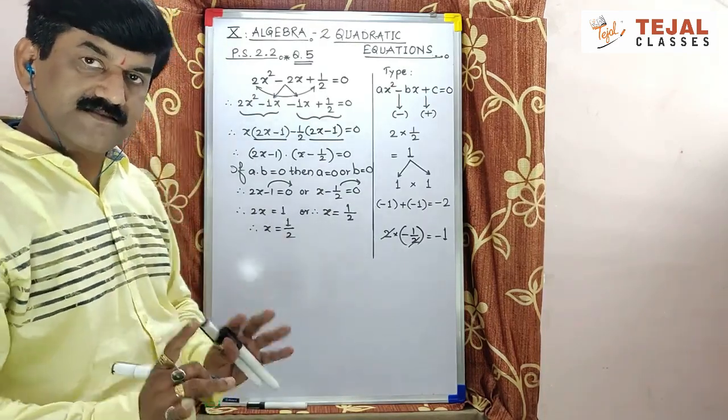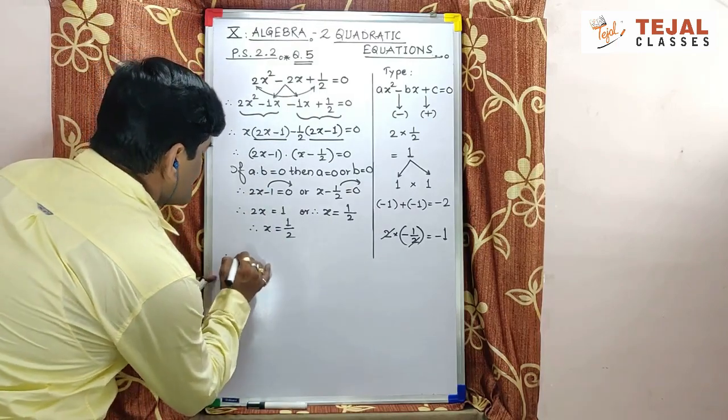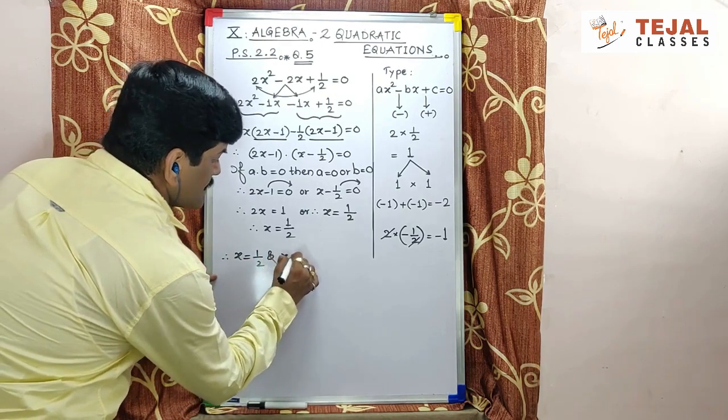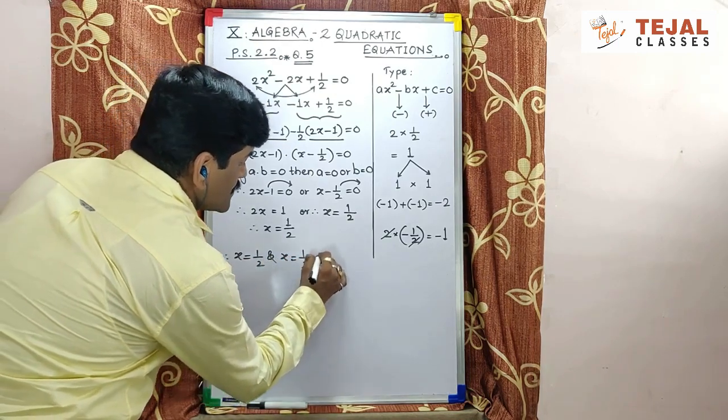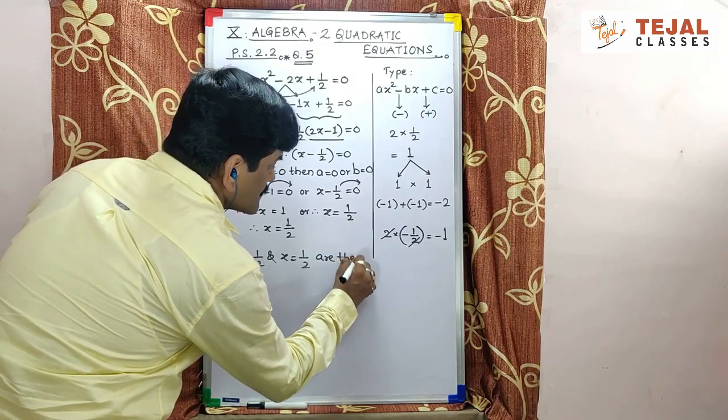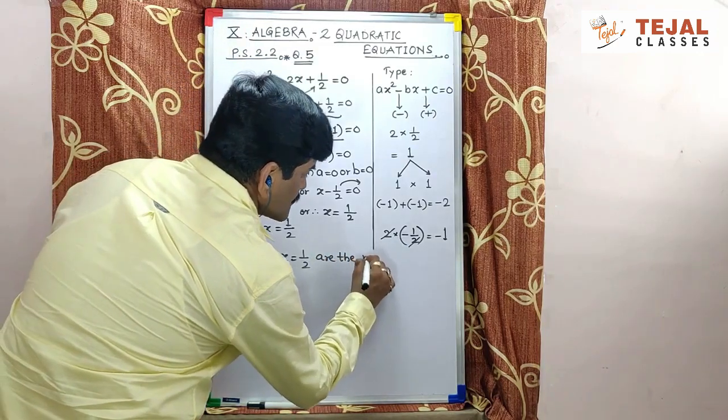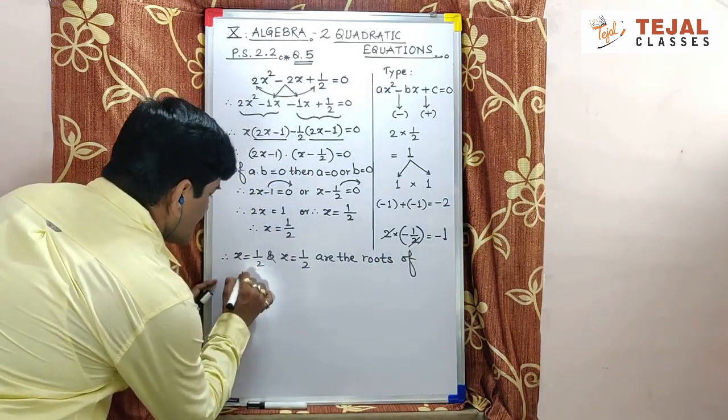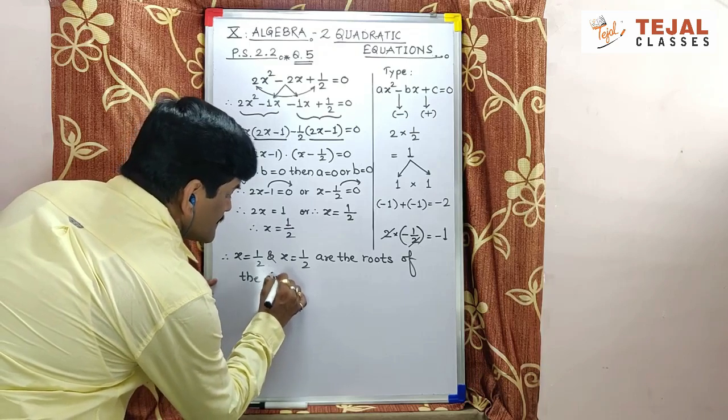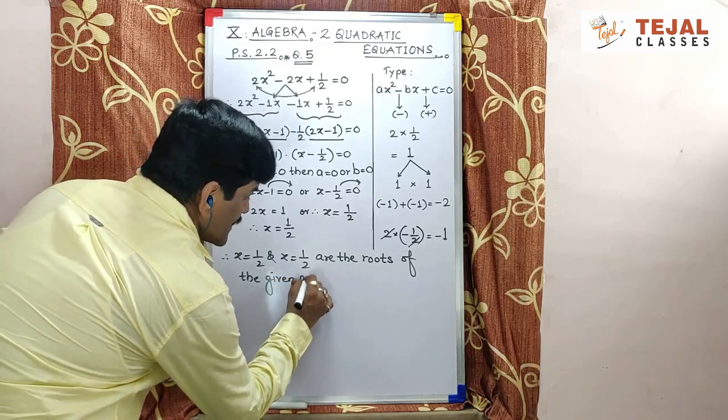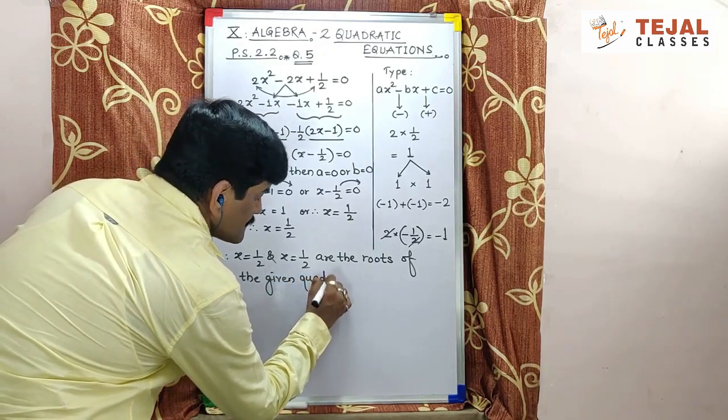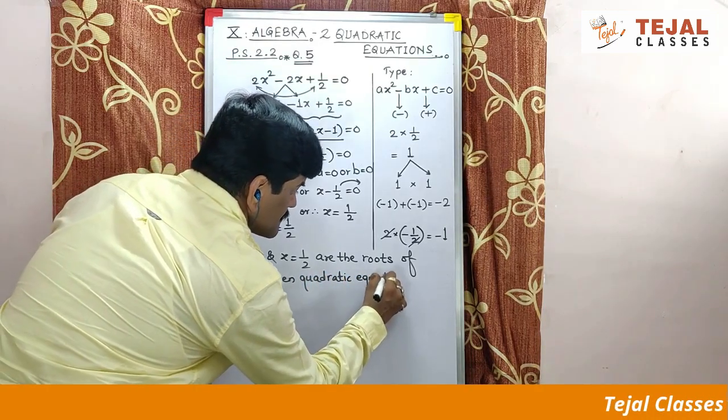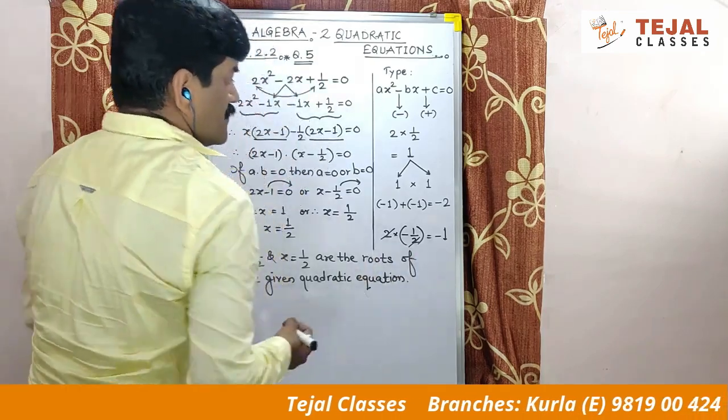But, likhte waqt answer aise hi likhoge. Therefore, x equal to 1 upon 2 and x equal to 1 upon 2 are the roots of the given quadratic equation, the given quadratic equation.